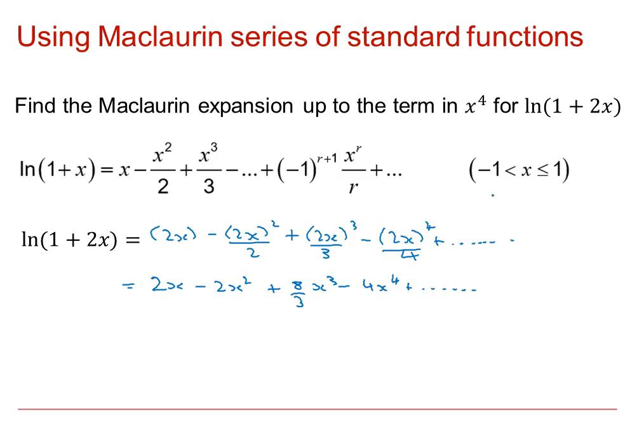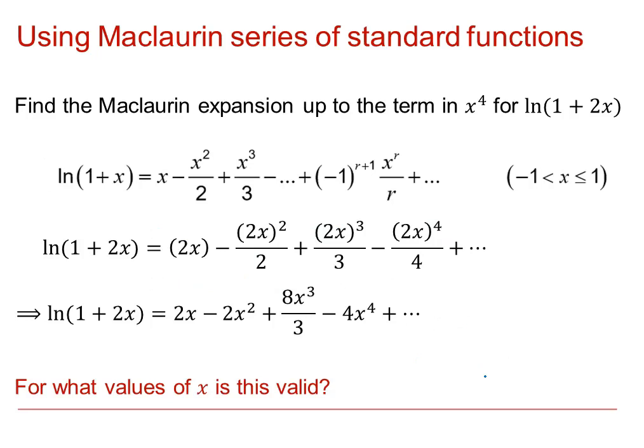Because the equivalent for ln(1 plus x) is valid between minus 1 and 1, then this expansion will be valid when 2x is between minus 1 up to including 1. In other words, when x is between minus 1 half and up to including plus 1 half. So the validity of this one would be between minus 1 half and plus 1 half.